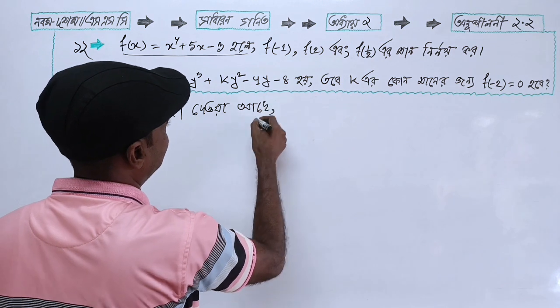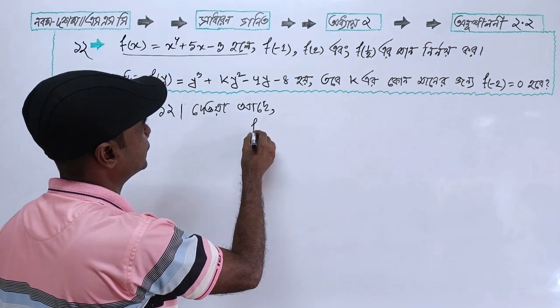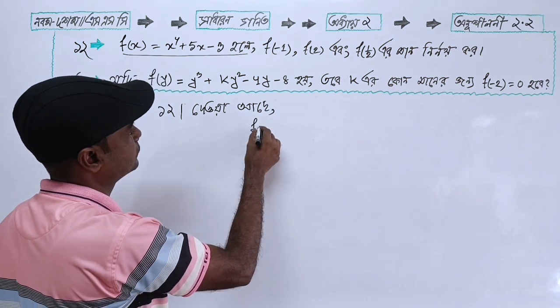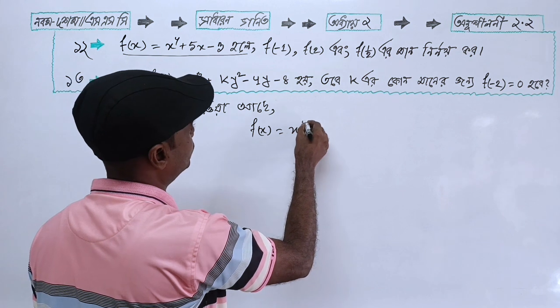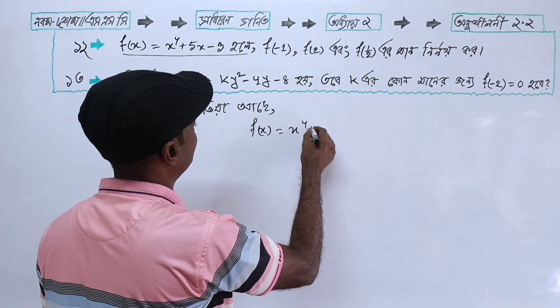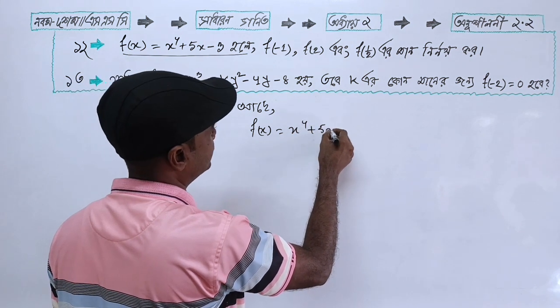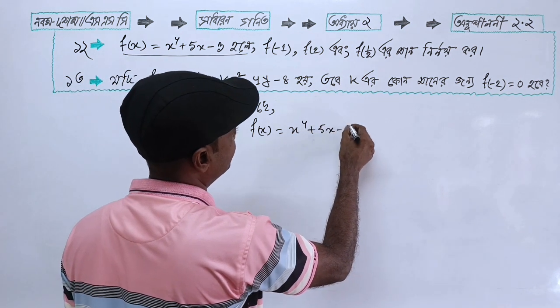Our function is f(x) equals x to the power 4 plus 5x minus 3.